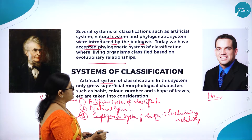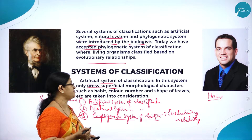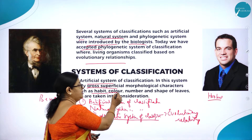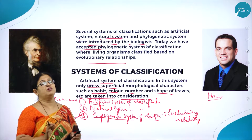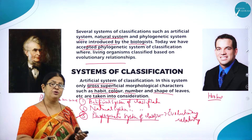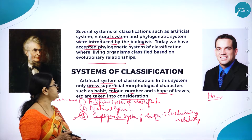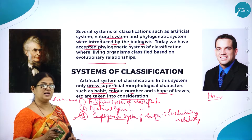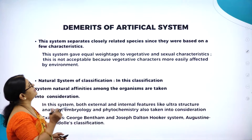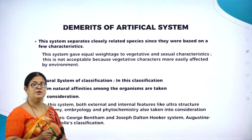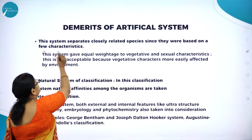In the artificial system of classification, only superficial morphological characters of plants are considered, such as habit, color, number and shape of leaves. Morphological features alone will not satisfy because they vary from plant to plant, and may not place plants correctly in the plant kingdom. The demerits of this system: it separates closely related species since it is based on very few characteristics.